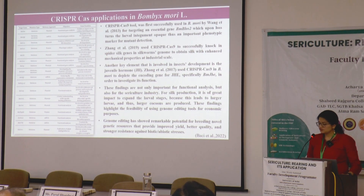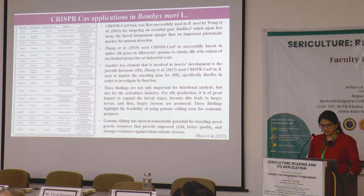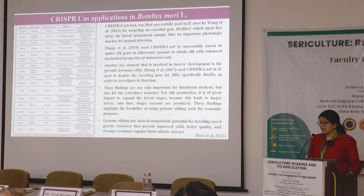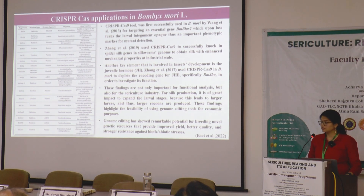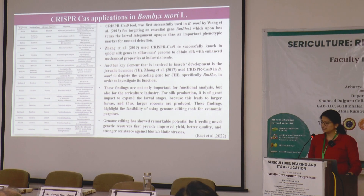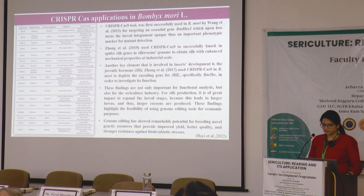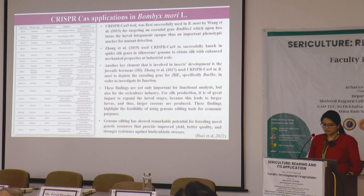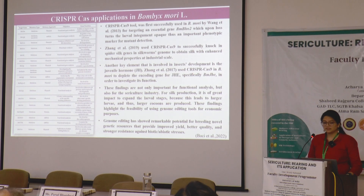This table shows some applications of CRISPR-Cas9 developed in Bombyx mori. CRISPR-Cas9 was first successfully used in Bombyx mori by Wong et al. in 2013, targeting the essential gene BM-BLOS2, whose loss turns the larval integument opaque — an important phenotypic marker for mutant detection. In another study, CRISPR-Cas9 was used to knock in spider silk genes into the silkworm genome to obtain silk with enhanced mechanical properties at industrial scale.